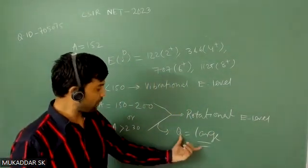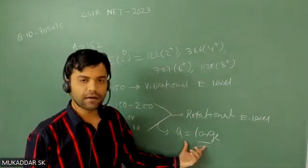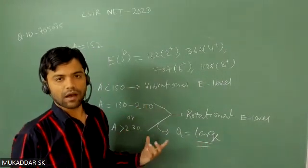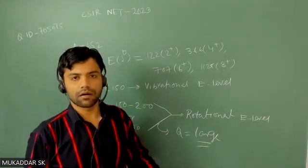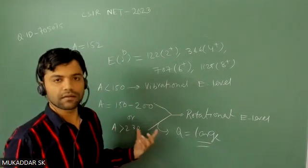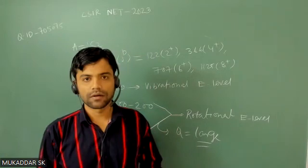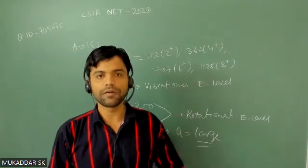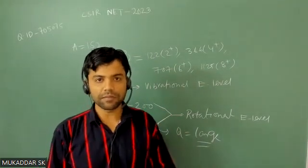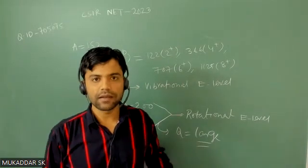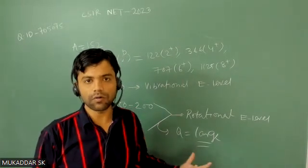Large quadrupole moment basically signifies that this nucleus is not having spherical shape, because quadrupole moment is a measure of the shape of nucleus. If Q is zero, it means that shape will be spherical. If you have Q non-zero or quadrupole non-zero, it means basically that nucleus is not spherical.